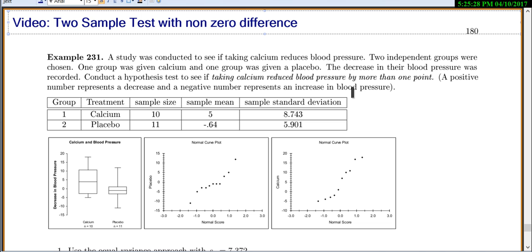In this example, we're going to do some more two-sample tests. We have a study to see if taking calcium reduces blood pressure. Two independent groups were chosen. One group was given calcium and one group was given placebo. The decrease in their blood pressure was recorded. We want to conduct a hypothesis test to see if taking calcium reduced blood pressure by more than one point.